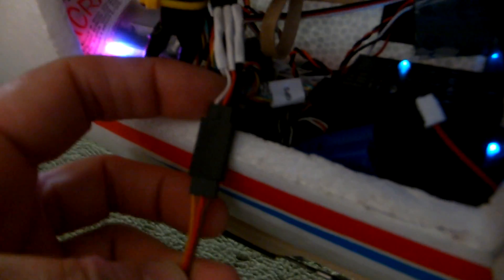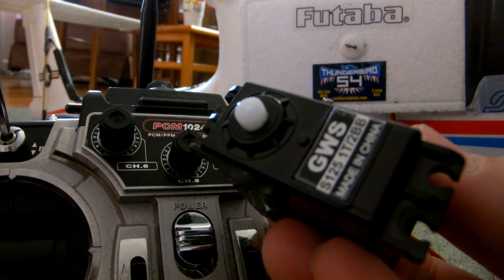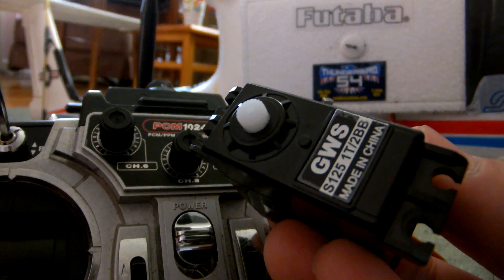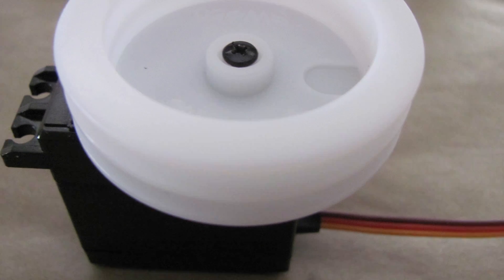The first and most important thing you want to do right when you get your servo before you start gluing anything to it is plug it into your receiver and neutralize all the trim. You want the gears in it to be perfectly centered before you start gluing stuff. Now just screw the included wheel onto the servo with the provided Phillips screw.